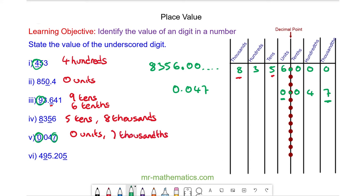And finally for question six we have 5, 2, 0, 5, 9, and 4. The nine is in the tens column, and the five is in the thousandths column.